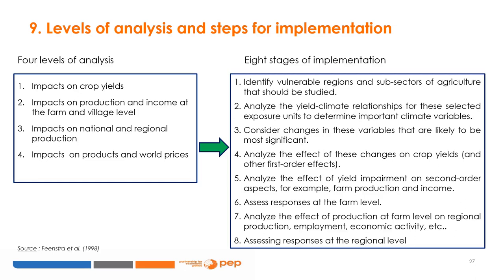Step one: identify vulnerable regions and subsectors of agriculture to be studied. Step two: analyze the yield-climate relationships for selected exposure units to determine important climate variables. Step three: consider changes in these variables likely to be most significant. Step four: analyze the effect of these changes on crop yields and other first-order effects. Step five: analyze the effect of yield degradation on second-order aspects, such as farm production and income. Step six: evaluate responses at the farm level. Step seven: analyze the effect of production at farm level on regional production, employment, and economic activity. Step eight: assess responses at the regional level.